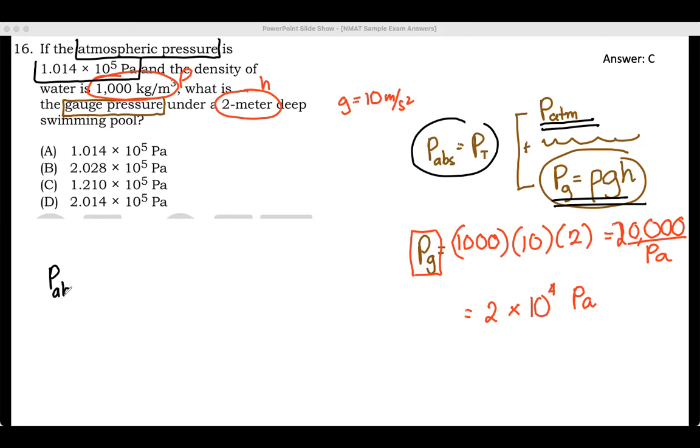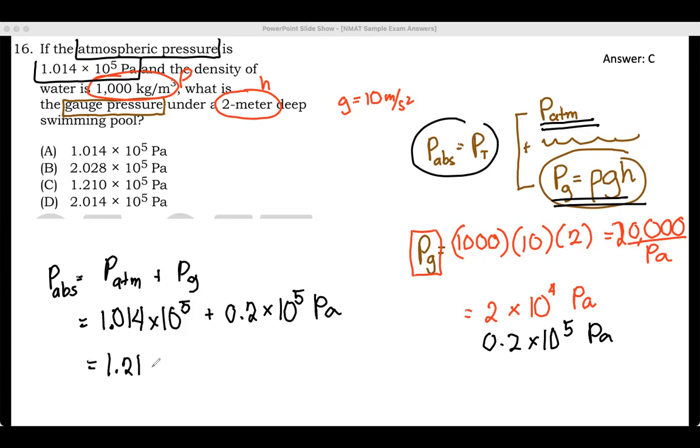So the absolute pressure is equal to the atmospheric pressure plus the gauge pressure. So that means that is 1.014 × 10^5 pascals, plus, let's just put this into times 10^5 pascals so that we can add that. 0.2 × 10^5 pascals, and we will have an answer of 1.214 × 10^5 pascals.